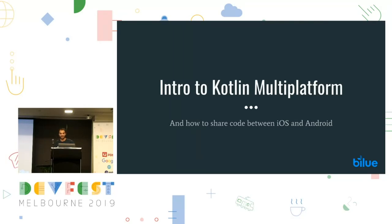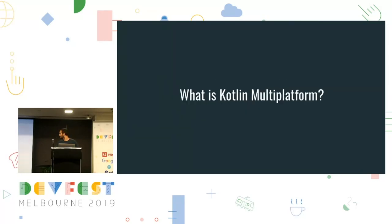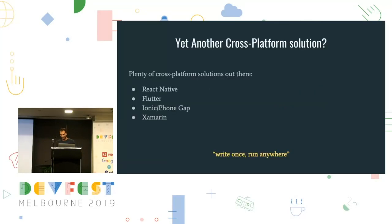So what if there was a way to share code between iOS and Android? That would be nice. I'm going to explain what Kotlin Multiplatform is. First off, I'm going to address all of the other cross-platform technologies that exist out there. There's a lot of stuff that already exists, so why would you introduce a new one?